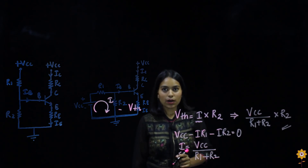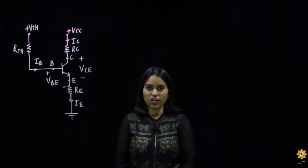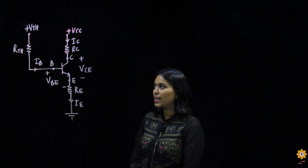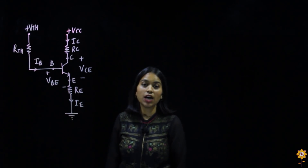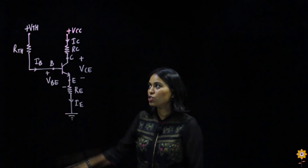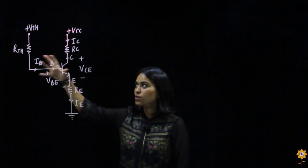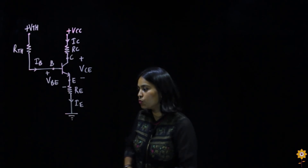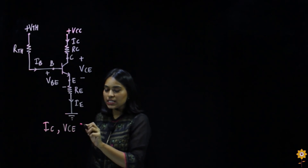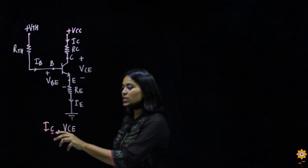We have now found out both Vth and Rth. Here is the simplified diagram for voltage divider bias configuration. It is exactly like self bias configuration — only in place of resistor RB we have Rth, and in place of Vcc we have Vth. Once we have found these two Thevenin's parameters, we simply find the Q-point parameters Ic and Vce, which are the coordinates of the operating point for all biasing configurations.